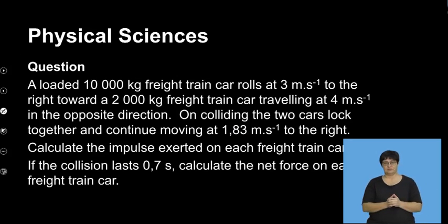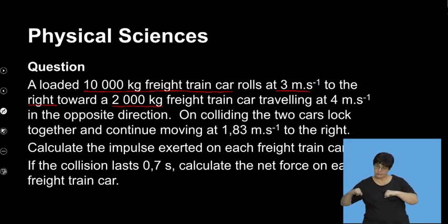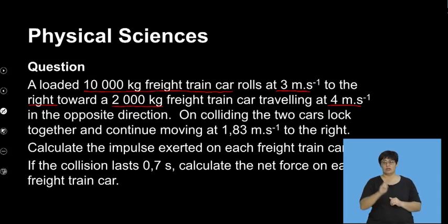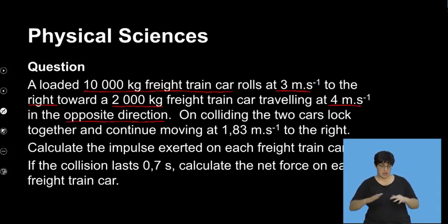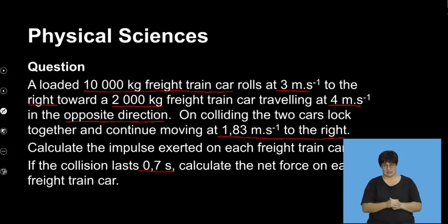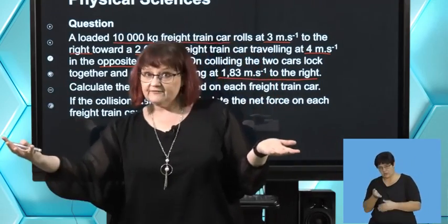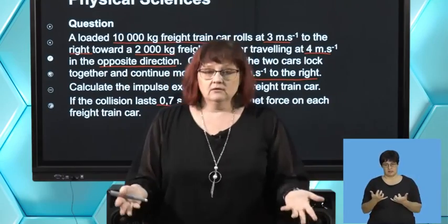Next question. A loaded 10,000-kilogram freight train car rolls at 3 meters per second to the right towards a much smaller 2,000-kilogram freight train car moving at 4 meters per second in the opposite direction. On colliding, the two cars lock together and continue moving at 1.83 meters per second to the right. Calculate the impulse exerted on each freight train if the collision lasts 0.7 seconds, and then calculate the net force on each freight train.